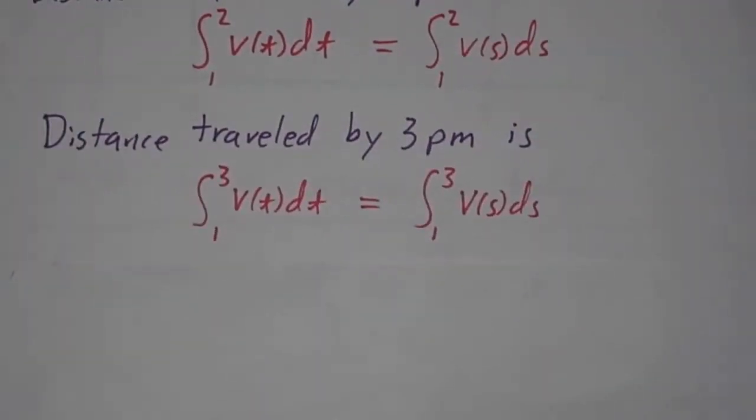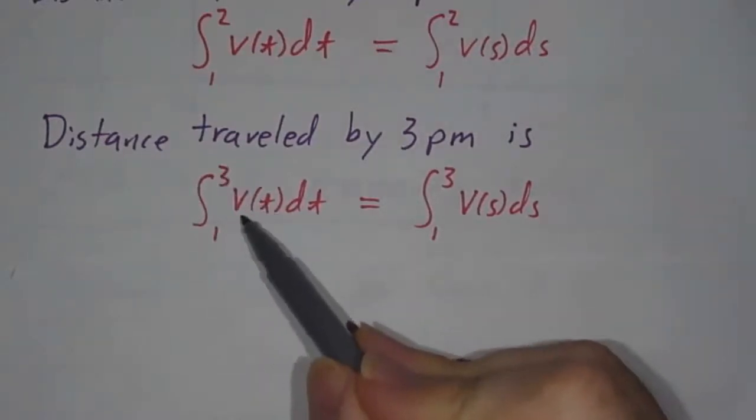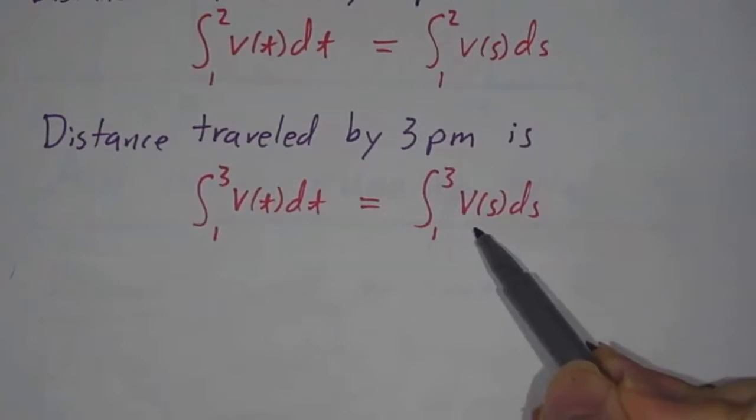If you want the distance traveled by 3 o'clock, that's just the integral from 1 to 3 of v(t)dt, or if you prefer, the integral from 1 to 3 of v(s)ds.